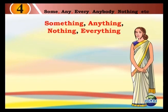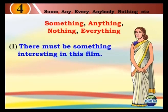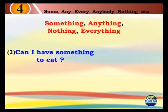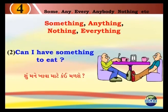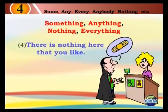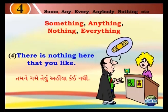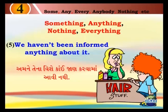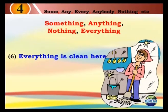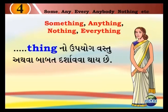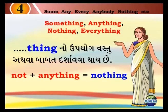Something, anything, nothing, everything. 25. There must be something interesting in this film. A film maa kaik rasprad hao jhoi ye. 26. Can I have something to eat? Shumaane khava maate kai mahi shi. 27. Is there anything to play? 28. There is nothing here that you like. Tamanne game tyevu ahiyaan kai nathi. 29. We haven't been informed anything about it. Amne tena vishya kai jana karva mahi nathi. Everything is clean here. Ahiyaan derek vhasthu swach chhe. Thing no upyog vhasthu athwa babat dhashrawa thai chhe. Not plus anything is equal to nothing.